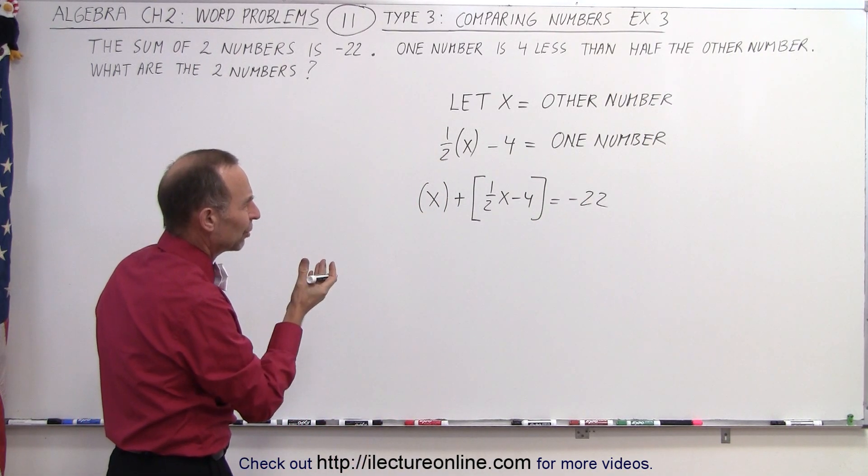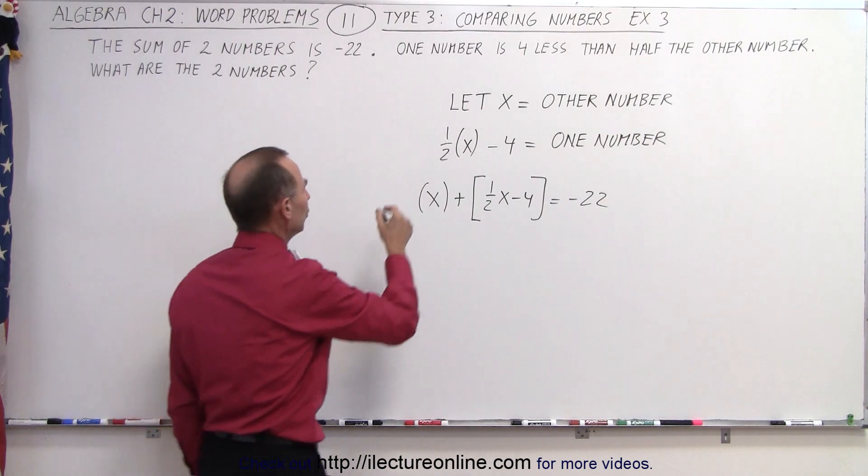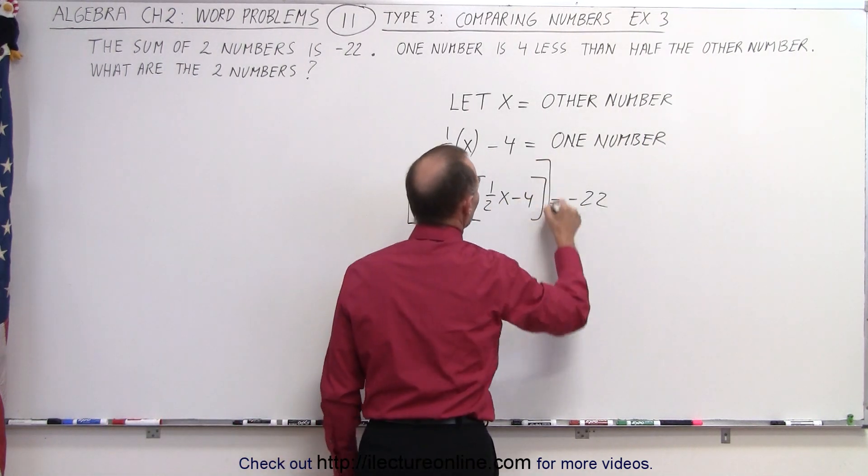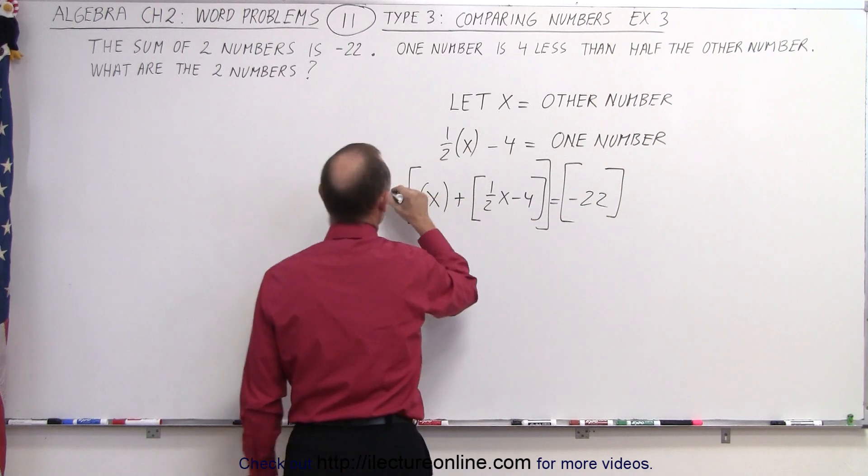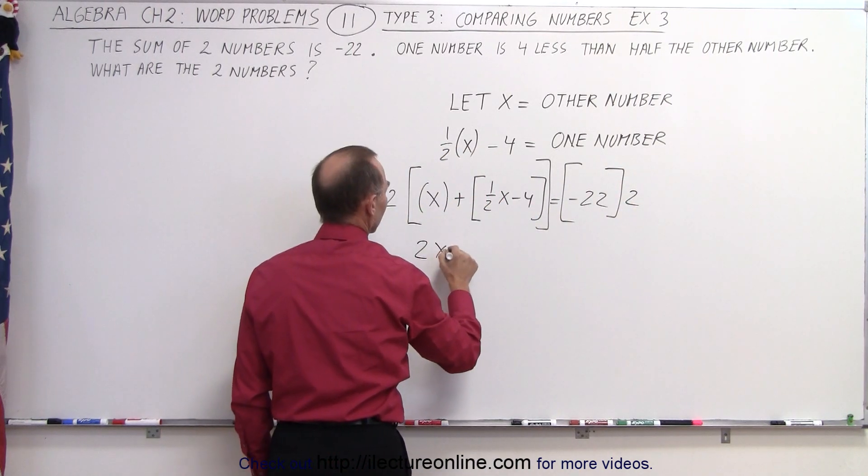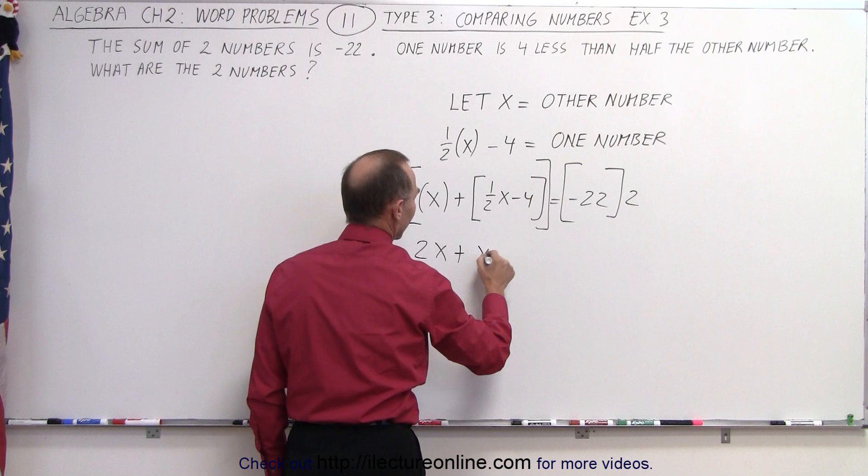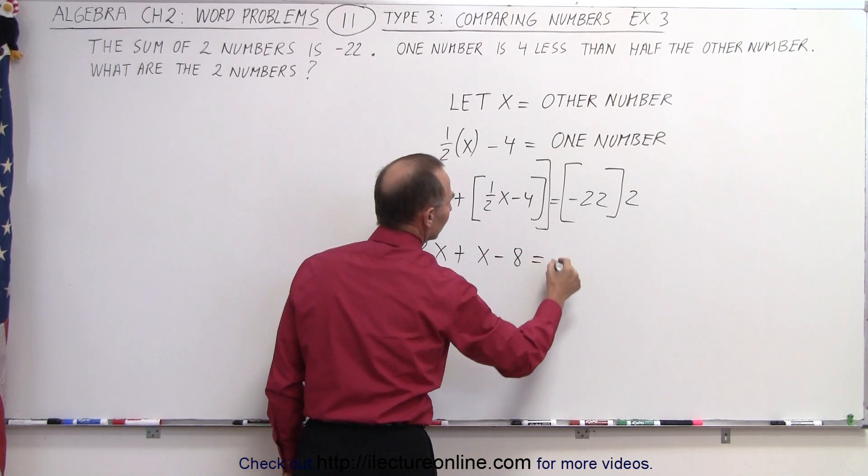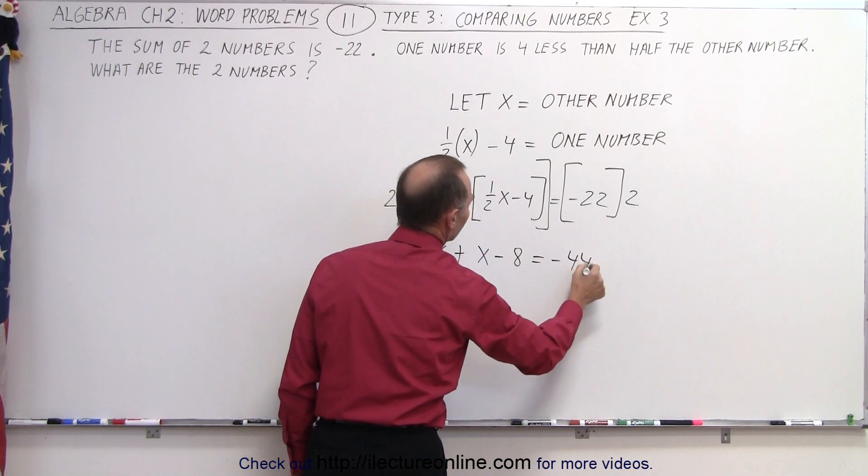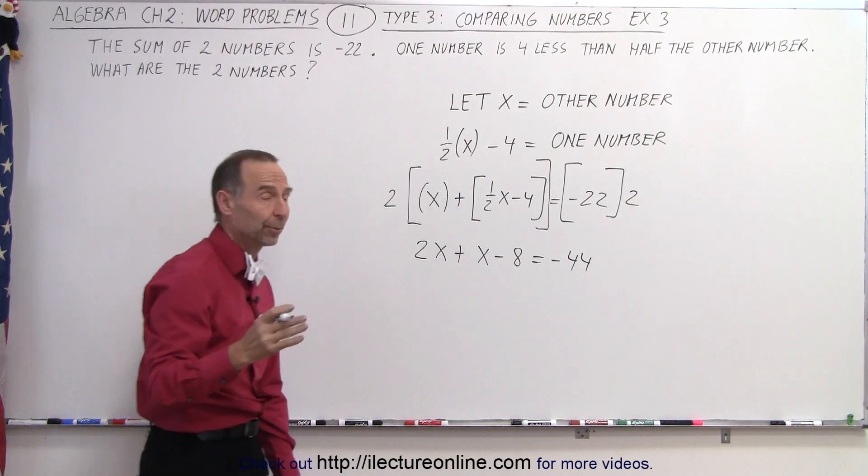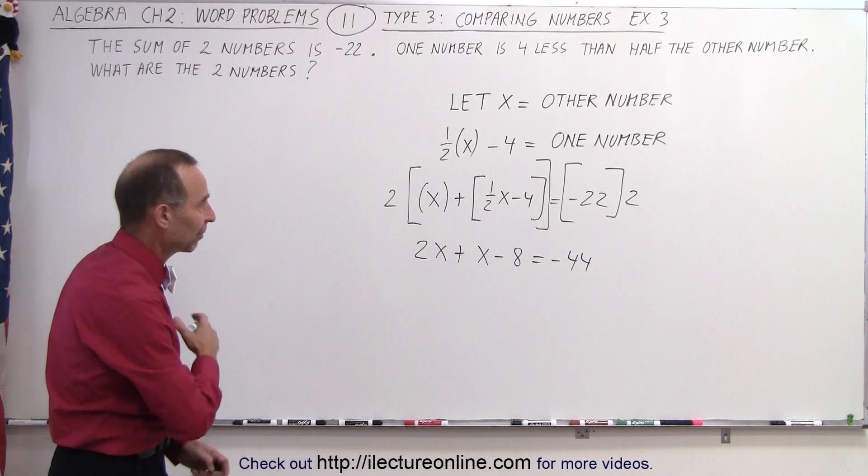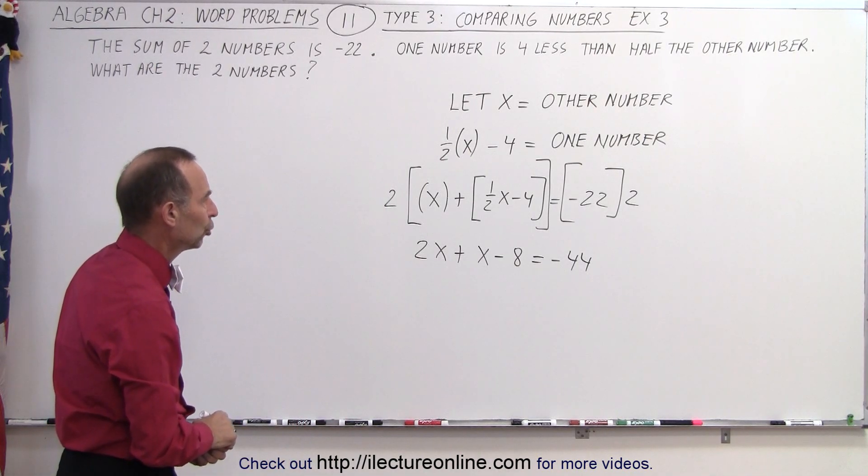The first thing we need to do is multiply both sides by 2, because that way we get rid of the decimal. When we do that, we get 2x plus x minus 8 is equal to minus 44. Notice at the same time, I also got rid of the parentheses and the brackets by simply multiplying everything by 2.